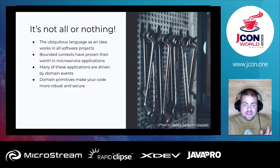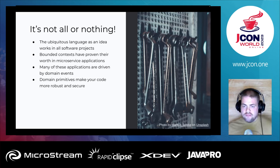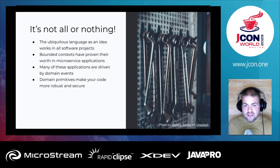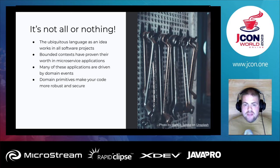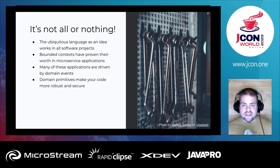Second point: it's not an all-or-nothing thing. You don't have to go all in to benefit from something. Domain-driven design is a collection of things that are useful by themselves. The idea of ubiquitous language works in all software projects regardless of whether you're using other DDD parts. Bounded contexts have proven their worth in microservice applications all around the world. Many microservice applications are driven by domain events. And domain primitives will make your code more robust, secure, and easier to read, regardless of whether you're using aggregates, entities, or repositories.